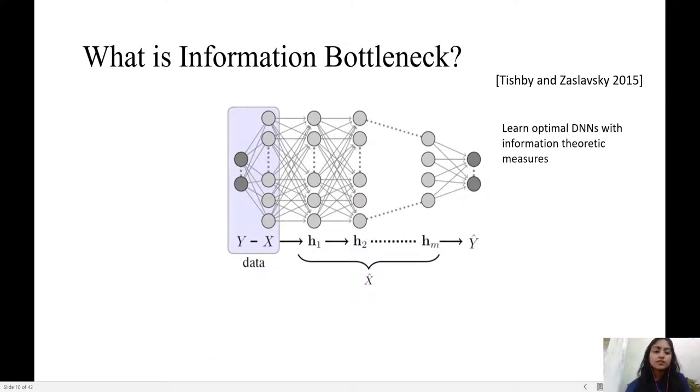Our working principle is based on information bottleneck theory introduced by Tishby for DNNs in 2015, which assumes a Markov chain from input to the output layer. This work presents that to get the most prediction-relevant representation, one must maximize mutual information between the target vector and the hidden layer representations.